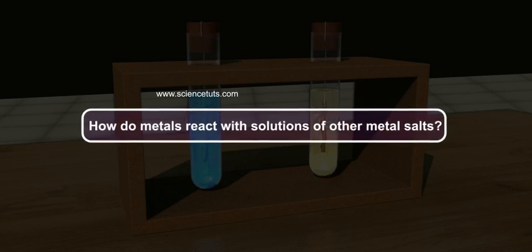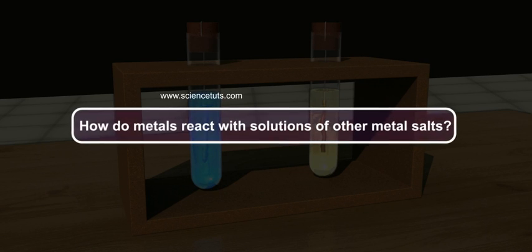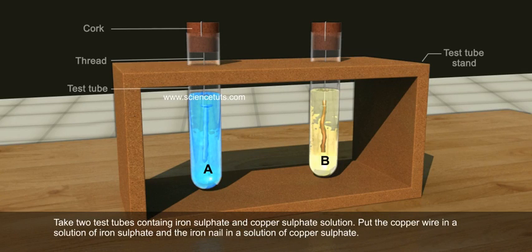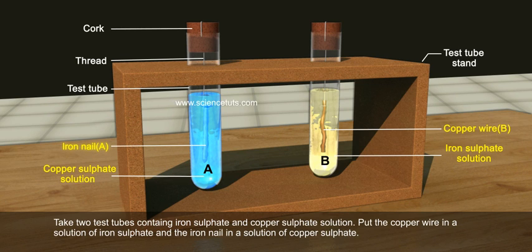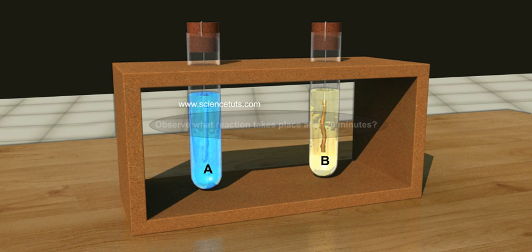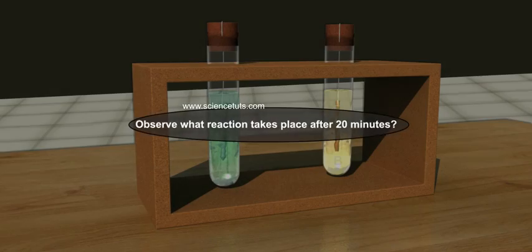How do metals react with solutions of other metal salts? Take two test tubes containing iron sulfate and copper sulfate solution. Put the copper wire in a solution of iron sulfate and the iron nail in a solution of copper sulfate. Observe what reaction takes place after 20 minutes.